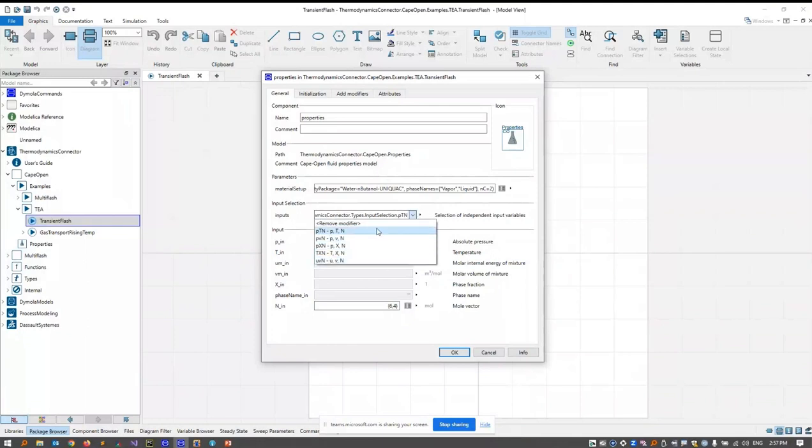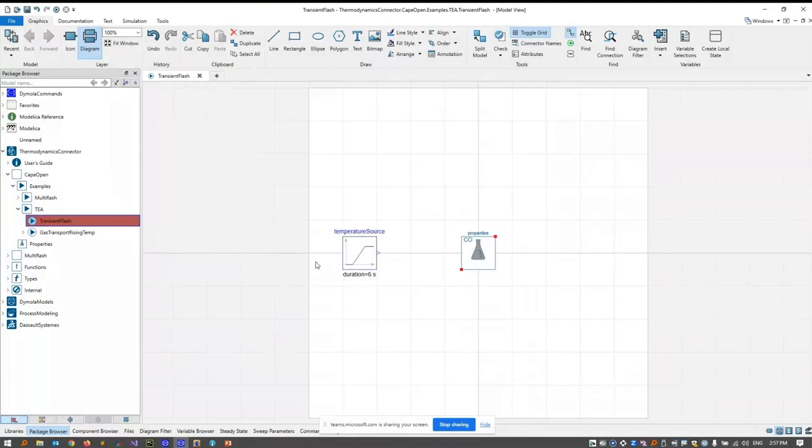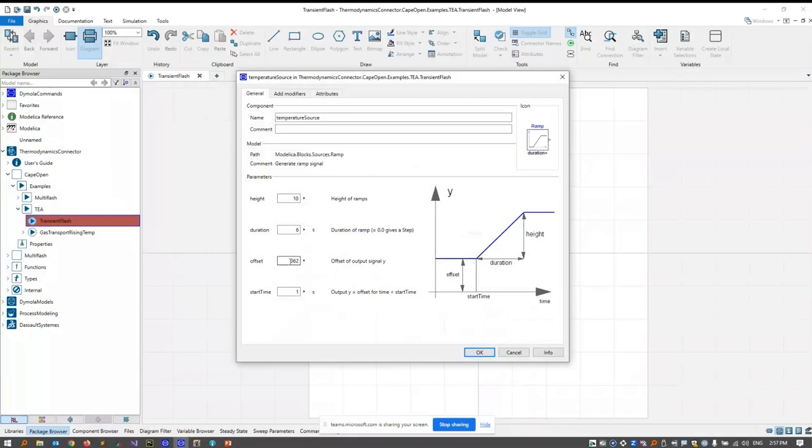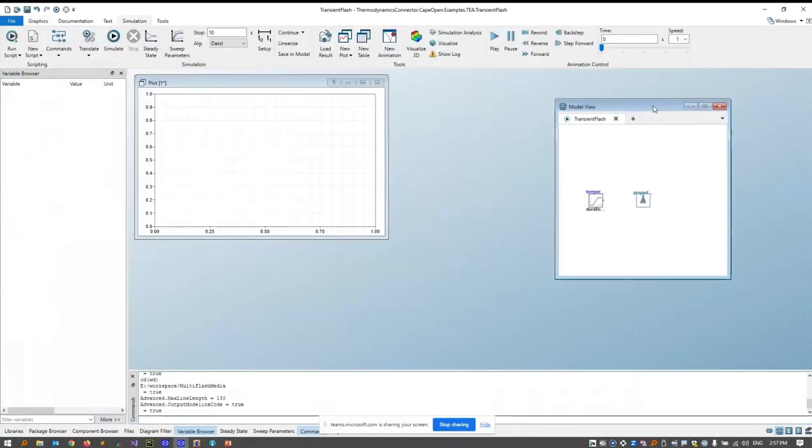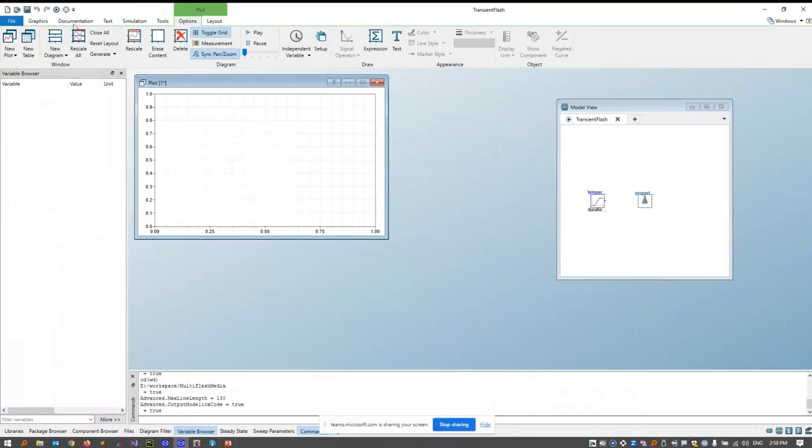I choose the PT flash, set a constant pressure, constant mixture composition and have as a temperature. I use a ramp source that ramps up the temperature from 362 Kelvin by 10 Kelvin. And now I change to the simulation layer. And beforehand, I created a plot script that will execute automatically after a simulation in order to save some time. So now I simulate the model.